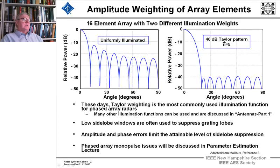So again, just like we went through amplitude weighting for array elements, we can do the same thing with phased arrays. So if we have a 16 element array with two different illumination weights, in one case uniform illumination, you're down 13 dB, and with a 40 dB Taylor pattern, and the Taylor patterns are used in phased array antennas a lot of the time, and they give you uniform side lobes, you can get 40 dB side lobes with Taylor weights, illumination functions.